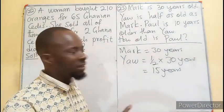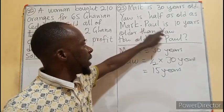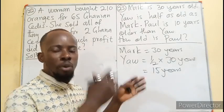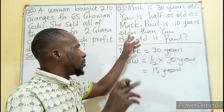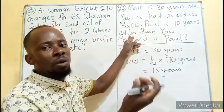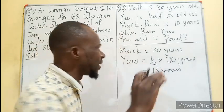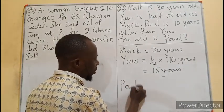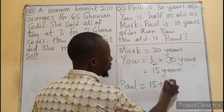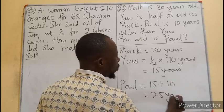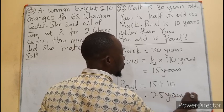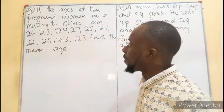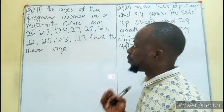Continuing: Paul is 10 years older than Yaw, meaning the difference between Paul and Yaw is 10 years. Since Paul is older, we add 10 to Yaw's age. Paul's age is 15 plus 10, so Paul will be 25 years old.